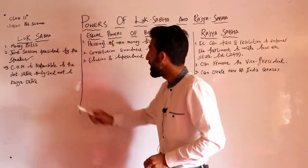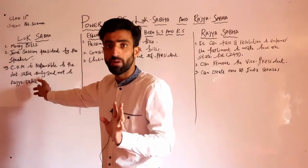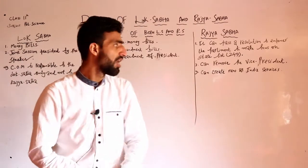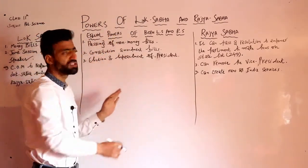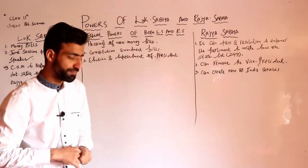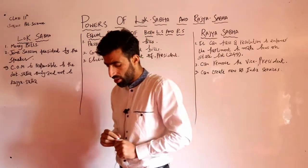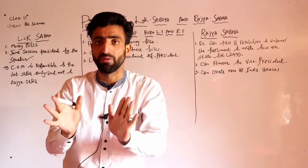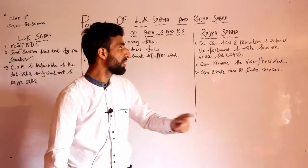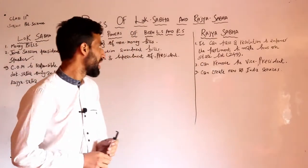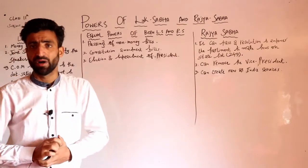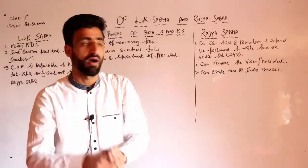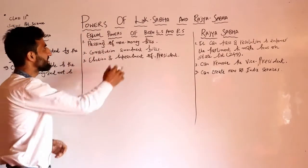Aaj hum is lecture mein pehle Lok Sabha ke exclusive powers dekhenge - which only belong to the Lok Sabha. Uske baad Rajya Sabha ke exclusive powers - the special powers of Rajya Sabha. We will see the special powers, and then we will also see the spheres where Lok Sabha and Rajya Sabha have equal powers. For example, passing of non-money bills.